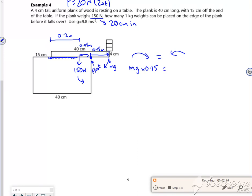0.15 is equal to a force of 150 times by 0.05. So I think that'll give me 0.15mg is equal to 75.